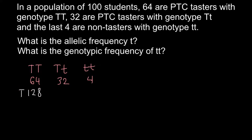As for the heterozygous form, we have 32 individuals, and 32 individuals would have 64 alleles total — 32 of them would be dominant alleles (capital T), and 32 would be recessive alleles. So altogether, 64 alleles split evenly between dominant and recessive. As for the homozygous recessive, we have 4 individuals that would have 8 alleles, and all of them are going to be small t alleles.